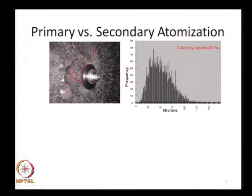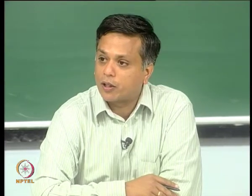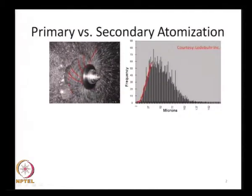On the right-hand side here I have the drop size distribution that the manufacturer — in this case Lededabeer — claims to have measured in this rotary atomizer spray. The serrations in this particular case may be on the order of about 250 microns, which means the primary drops formed are on the order of about 250 microns. And if this is the distribution observed, you can see that there are hardly any drops on the order of 250 microns in the real spray. So the question one has to ask is: what happened in the middle? That is where secondary atomization happened.